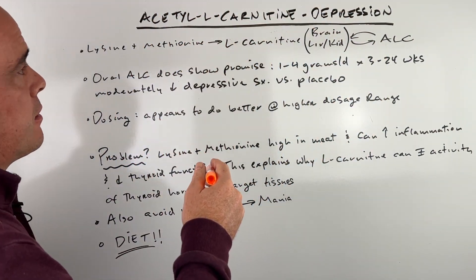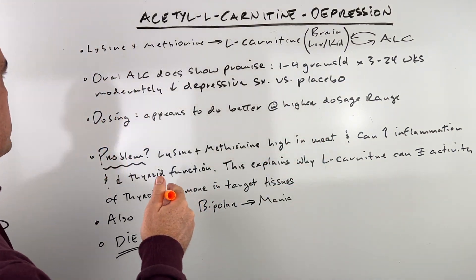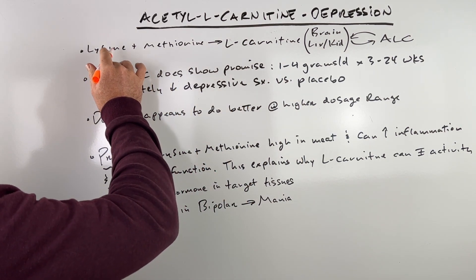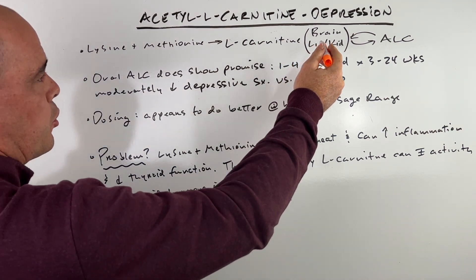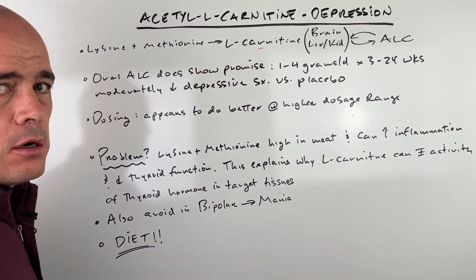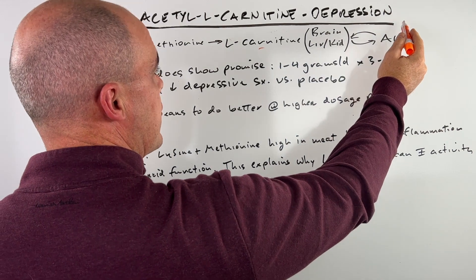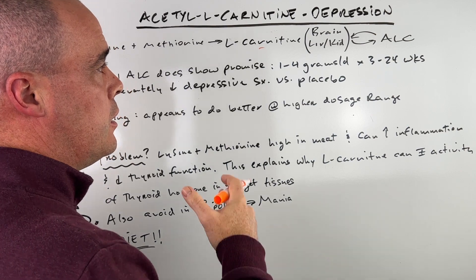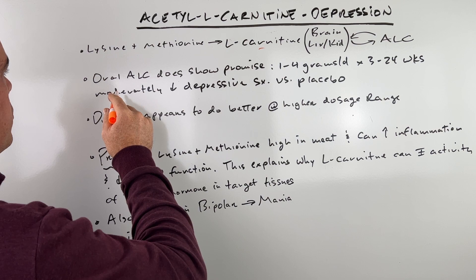So acetyl-L-carnitine, which I'll just call ALC from this point forward, it's going to be a lot easier. First we've got to understand what's going on in the body. You can consume lysine and methionine in your diet, and what your body does is in the brain, liver, and kidney, it converts it to a product called L-carnitine. Your body can then convert L-carnitine to ALC, and ALC if needed can be converted back to L-carnitine. So it's coming from your diet, number one.